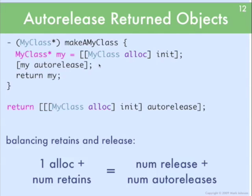You can see that if you try to release the object — myObject — before you return it, that's not going to work because the retain count is going to go to 0, the object gets deleted, and then you'll be returning a reference to a deleted object, which is of course going to cause a crash. You can experiment with this in some exercise code, and it will click if it didn't quite make sense yet.